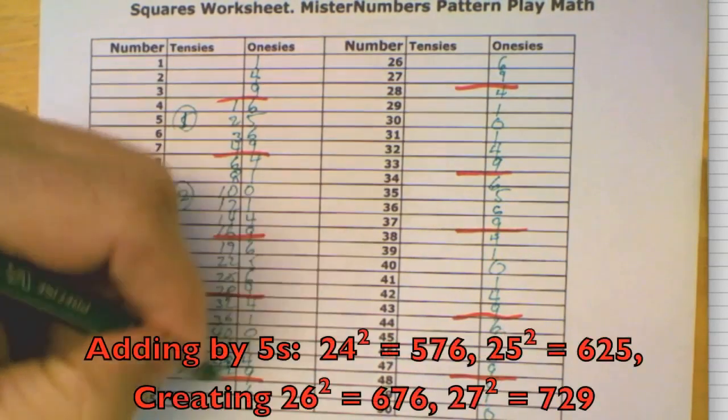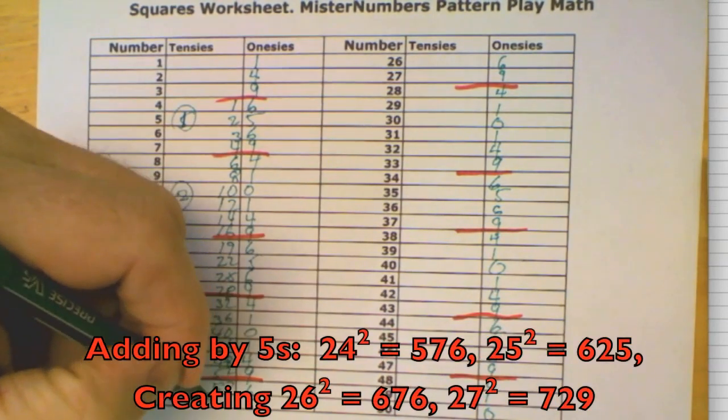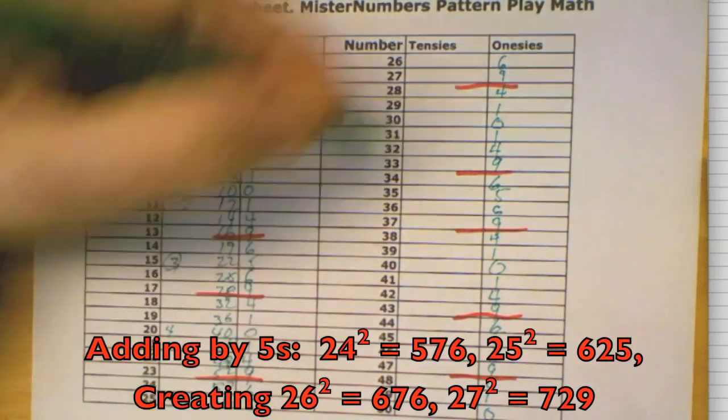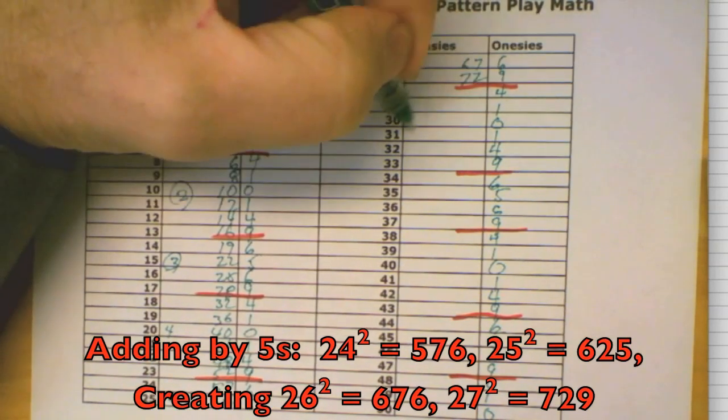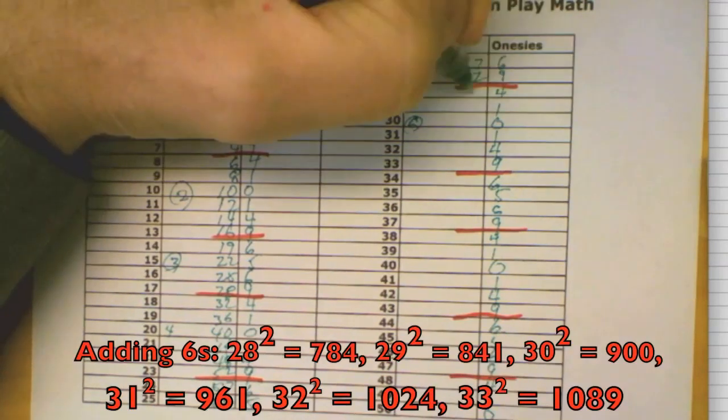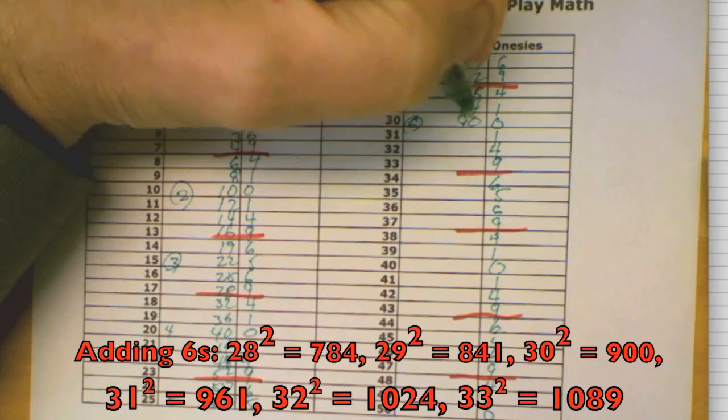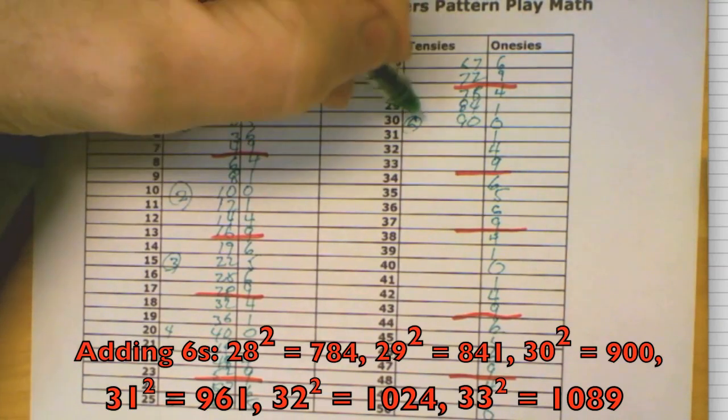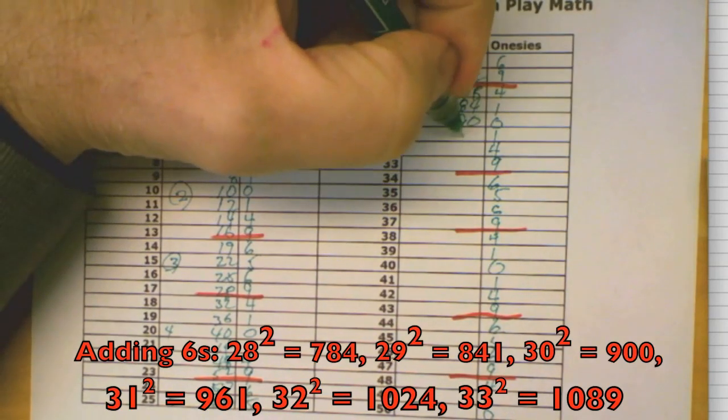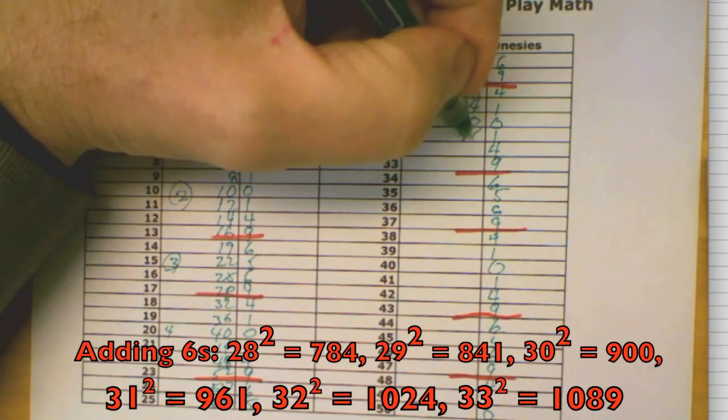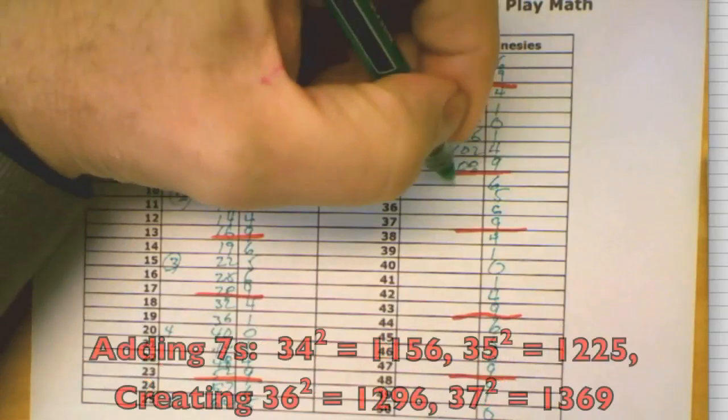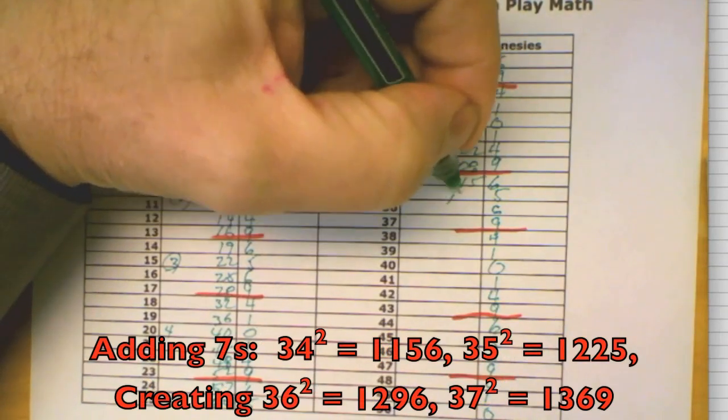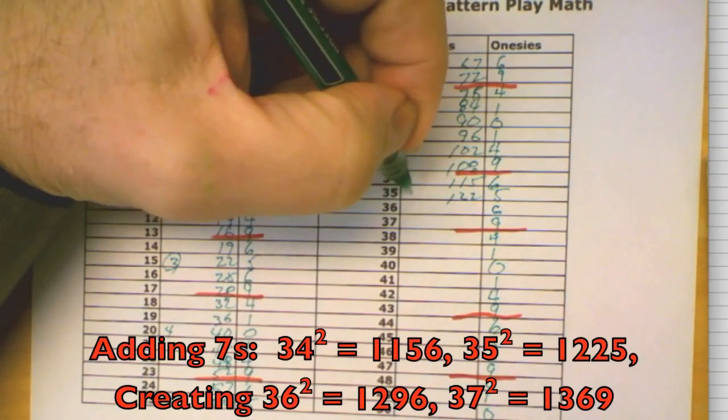Now it's going to go up by 5s: 57, 62, 67, 72. Now going up by 6s: 78, 84, 90 - and take a look at that, 30 squared is 900. Still going up by 6s: 96, 102, 108. Now going up by 7s: 115, 122, 129, 136.